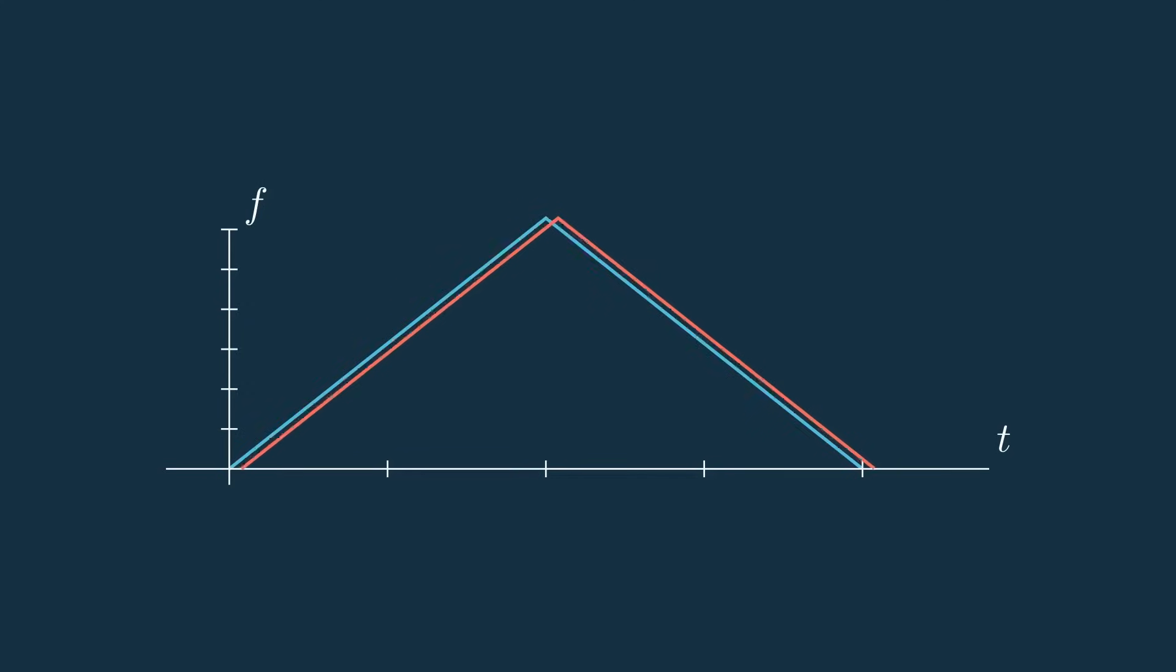Consider what a target's frequency over time would look like if it had some non-zero range and velocity. First, the range would shift the frequency plot to the right by the amount of time it takes for the signal to propagate and return. This time shift creates a difference in frequency at any given point along this ramp known as the beat frequency, or fbeat. So far this is the exact same as what we talked about in the previous videos with the sawtooth modulation.